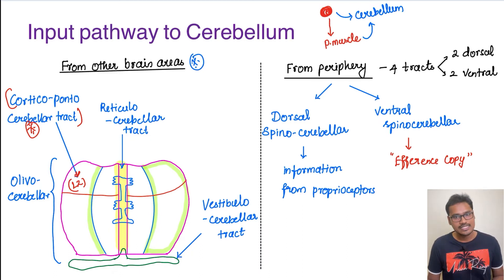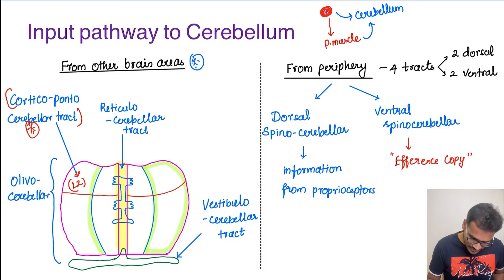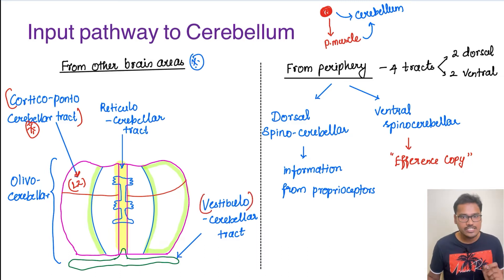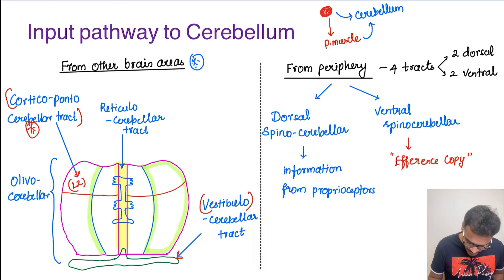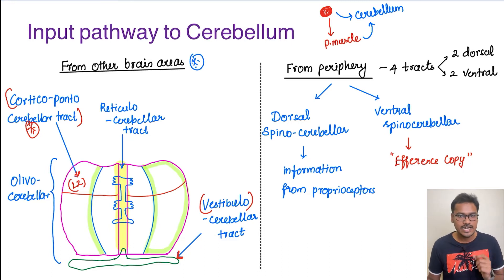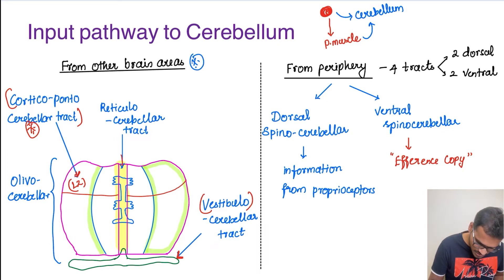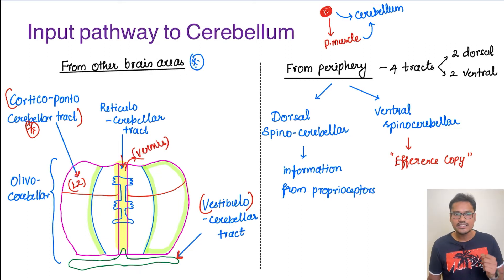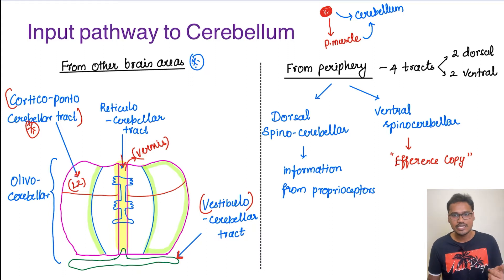The flocculonodular lobe is involved with the vestibular apparatus, so the vestibulo-cerebellar tract goes to the flocculonodular lobe. There is also the reticulo-cerebellar tract — the reticular activating system giving information to the cerebellum — which goes to the central portion, the vermis. There is also the olivo-cerebellar tract, which gives impulses to all zones: the lateral zone, the vermis, and the intermediate zone.